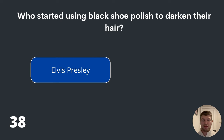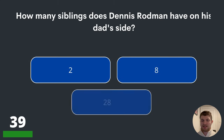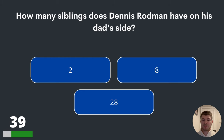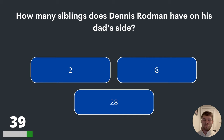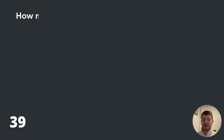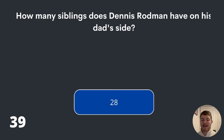Question thirty-nine. How many siblings does Dennis Rodman have on his dad's side? Two, eight or twenty-eight? Dennis Rodman has twenty-eight siblings on his dad's side.